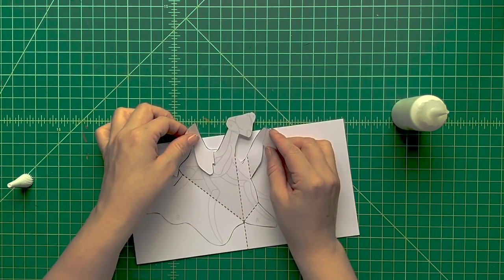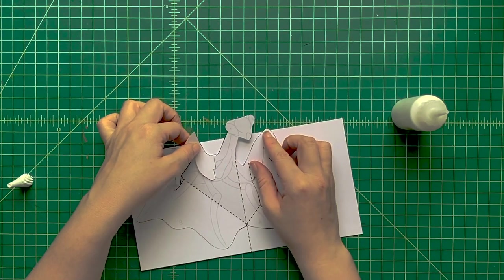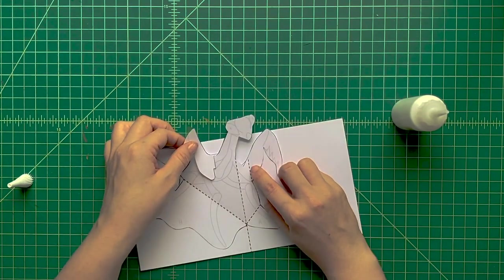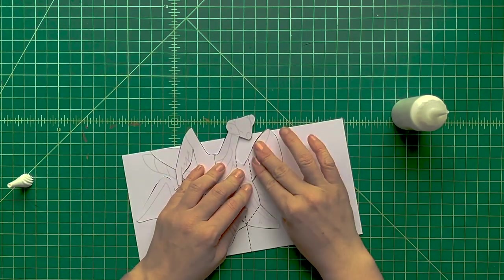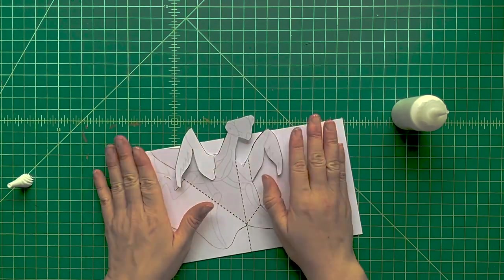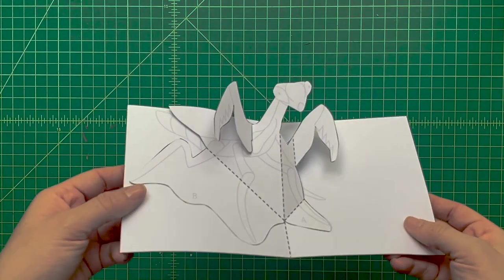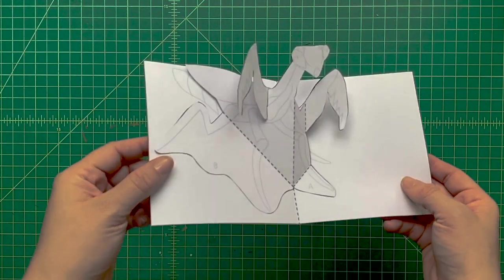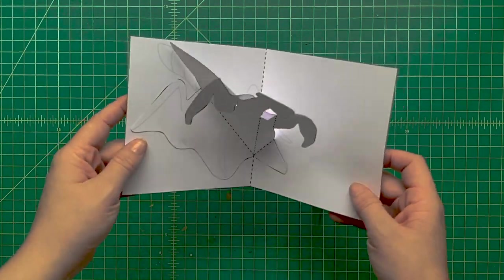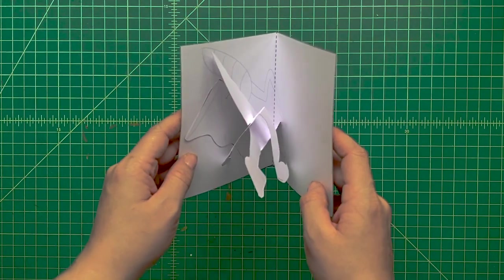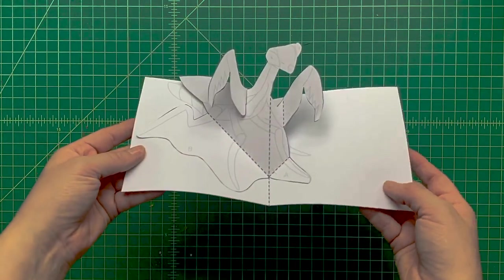Then fold the other praying mantis arm on top of that piece. See, it should line up perfectly. Press it down, make sure it's glued into place. And there we are, we have our very own really cool pop-up praying mantis. Look at that!